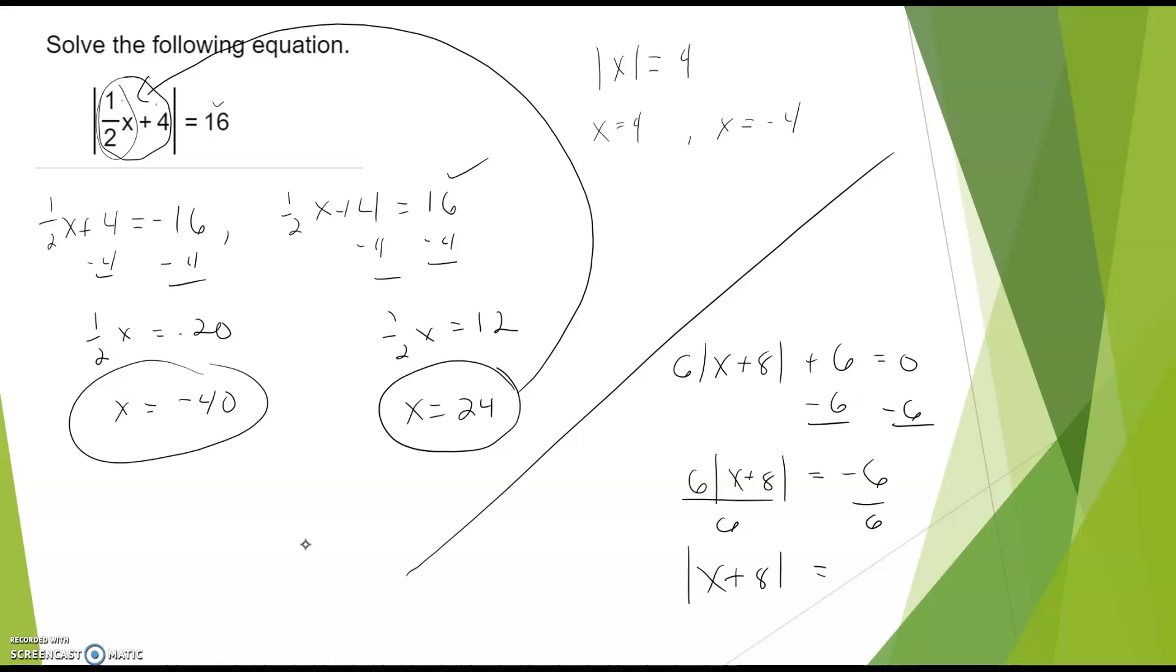So we've got to be careful about this. What number, when I add it to 8, take the absolute value, I get negative 1. Negative 6 divided by 6, negative 1. The answer is there is no number, right? Anytime you absolute value something, you always get a positive. So if you end up with something like this, then you will have no solution.